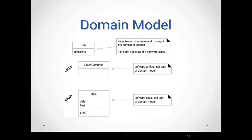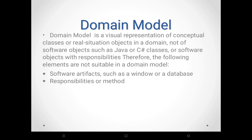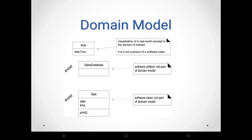This is an example of a domain model — the first conceptual class. It is not a picture of a software class; it is a visualization of a real-world concept in the domain of interest. The first one is valid: it has a name, it has attributes, and it does not have any responsibilities. The second example shows you should not use a database — a database is not part of the domain model. The third example shows 'sale' with date, time as attributes, but 'print' as a responsibility or method — you cannot use any responsibilities or methods. You should avoid database and responsibilities in the domain model.